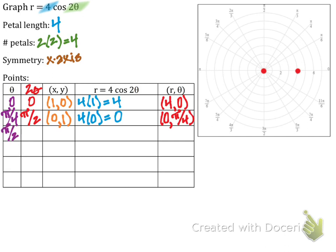Next, trying theta equals pi over two: two times pi over two is pi. Plugging in, we get the ordered pair (−4, pi/2) — there's where that goes. Remember we have x-axis symmetry, so I can plot its mirror point as well. Now we know we have four petals, so the fourth one follows from symmetry.